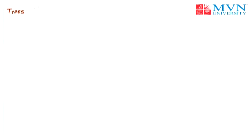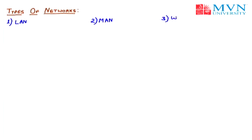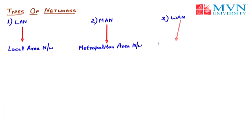Let us talk about the types of networks. Depending upon the size of the network, we have three types: LAN, MAN, and WAN. LAN stands for Local Area Network, MAN stands for Metropolitan Area Network, and WAN stands for Wide Area Network.